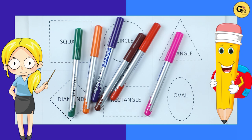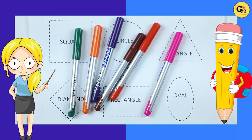Which shape is this? Square, circle, triangle, diamond, rectangle, oval.